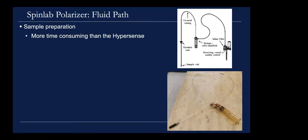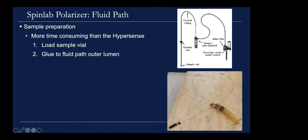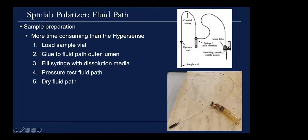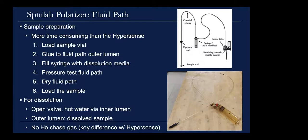SpinLab sample prep is more time-consuming than the Hypersense. With the Hypersense, you put your sample in a cup, load it on the stick, and you're done in about 30 seconds. For the SpinLab, you must load the sample in a vial, glue the vial to the plastic lumen, load dissolution media in the syringe, pressurize, perform a pressure test on the fluid path to check for blockages, dry it to remove residual moisture, then load the sample. However, because you can polarize multiple samples simultaneously, you can usually recoup that front-end prep time on the back end.